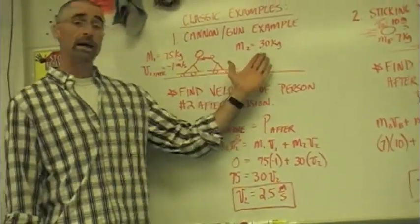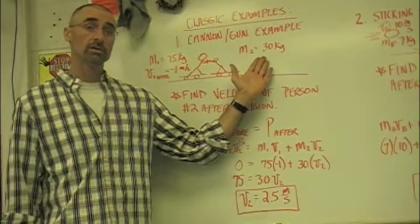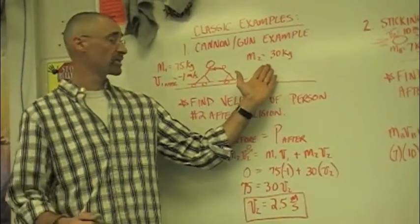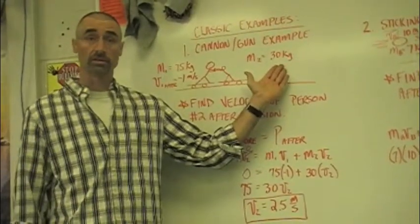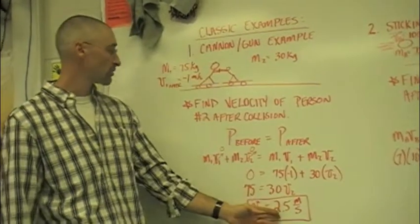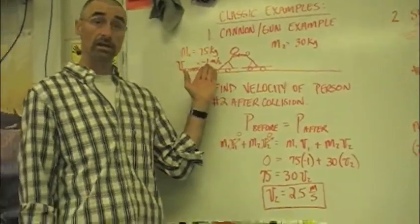Does it make sense that that would be the right answer? Well, let's think about it. Is this guy more massive or less massive? Less massive. So you saw in the example, the less massive guy came out going faster, didn't he? Okay? In this case, he's coming out 2.5. This guy was negative 1.